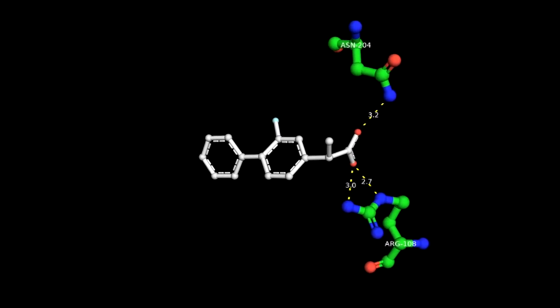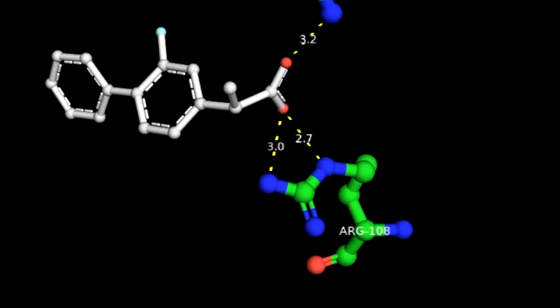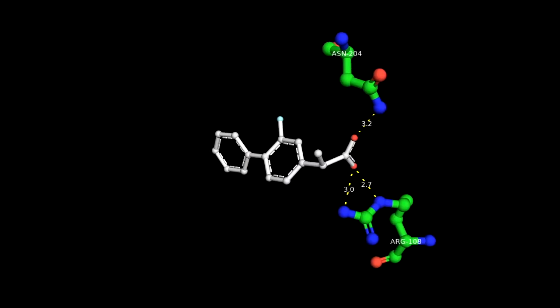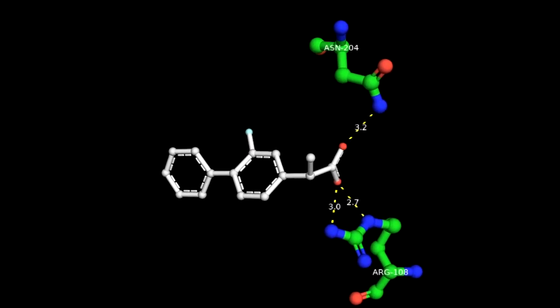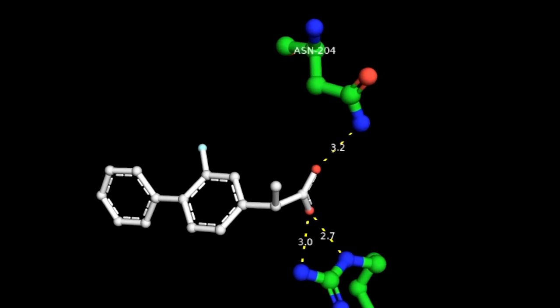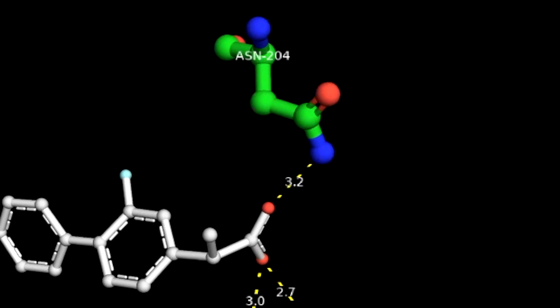These two hydrogen bonds are 3.0 and 2.7 Angstroms in length and they are represented by the yellow dashes. The other oxygen atom of flubiprofen also forms a single hydrogen bond with hydrogen of asparagine residue number 204. This hydrogen bond is also represented by a yellow dashed line and it is 3.2 Angstroms in length.